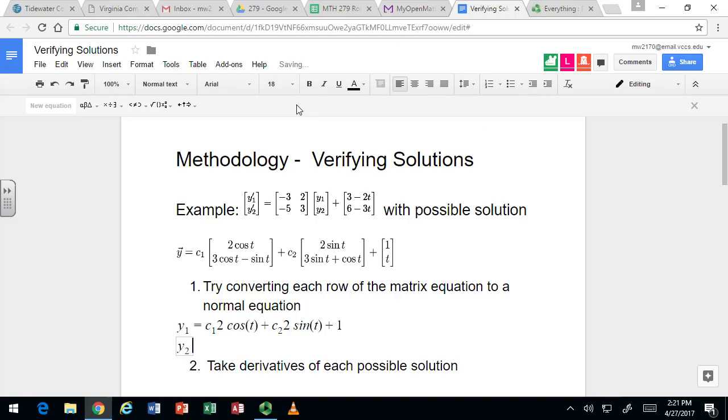And y2 equals c1, and you want to make sure that if you have multiple terms in this, you want to use parentheses so that c1 would apply to both. Again with derivatives we know that the c1 won't really be a big deal. So c1 times 3 cosine t minus sine t, plus c2 times 3 sine t plus cosine t, plus t from the vector at the end.